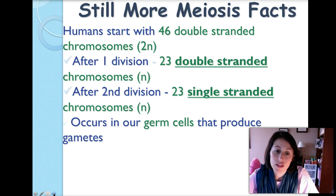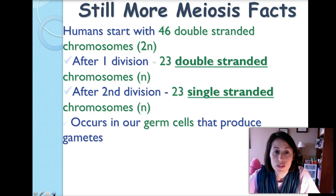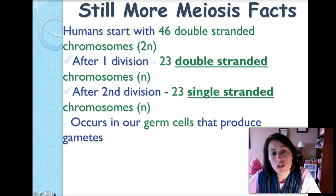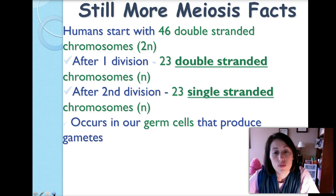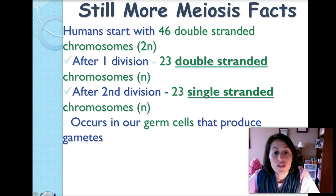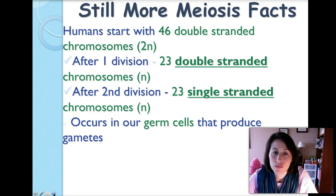Humans have 46 chromosomes in their body cells. Humans start with 46 double-stranded chromosomes. After the first division they end up with 23 double-stranded chromosomes — considered a haploid cell. After the second division there are 23 single-stranded chromosomes, still a haploid cell. This occurs in our germ cells, which are the cells that produce the gametes.